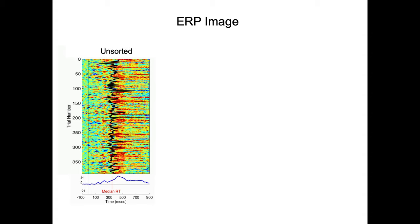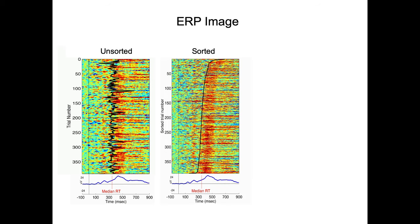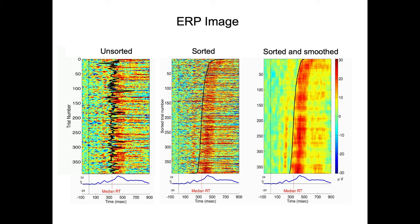Now what we can do is we can sort the trials by the reaction time of the subject and that's what's represented here. What we can do also to see better the evoked activity is that we can smooth the trials across the y dimension and that's what's represented here. Then we can see patterns emerging and in all cases you see in the bottom of each plot the event-related potential is exactly the same, we just reordered the trials. But we can see much more information in the sorted and smoothed ERP image than we can see in the ERP.